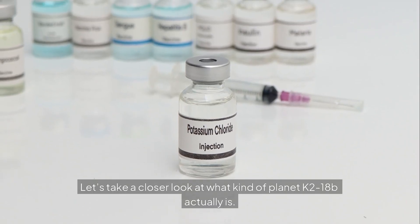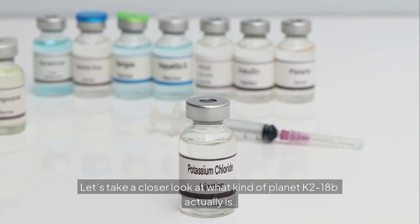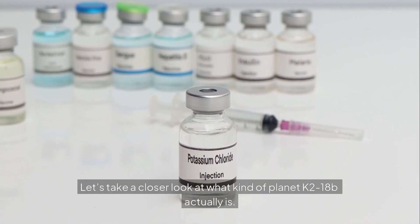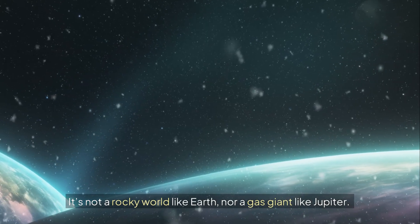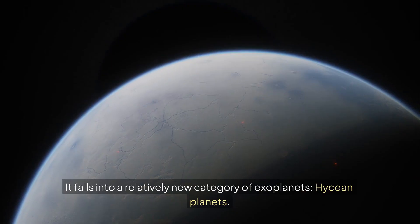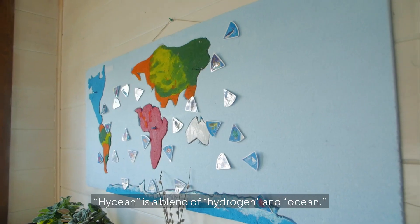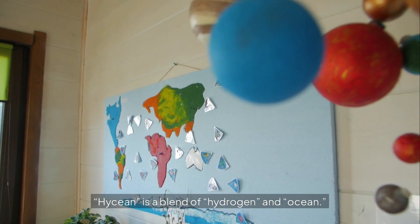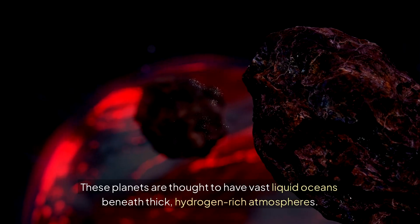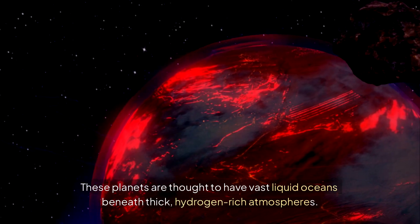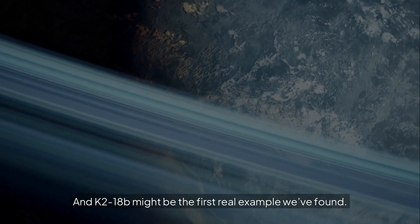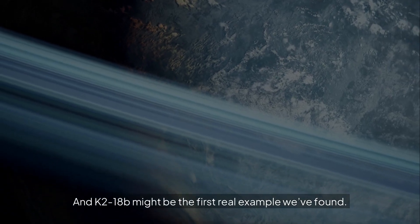Let's take a closer look at what kind of planet K-218b actually is. It's not a rocky world like Earth, nor a gas giant like Jupiter. It falls into a relatively new category of exoplanets, Hycean planets. Hycean is a blend of hydrogen and ocean. These planets are thought to have vast liquid oceans beneath thick, hydrogen-rich atmospheres.